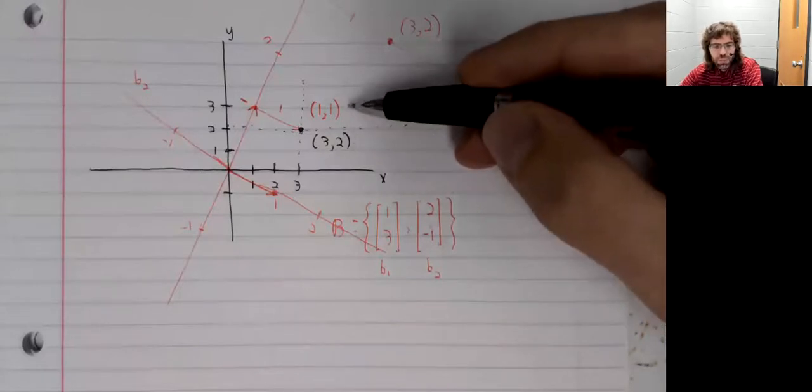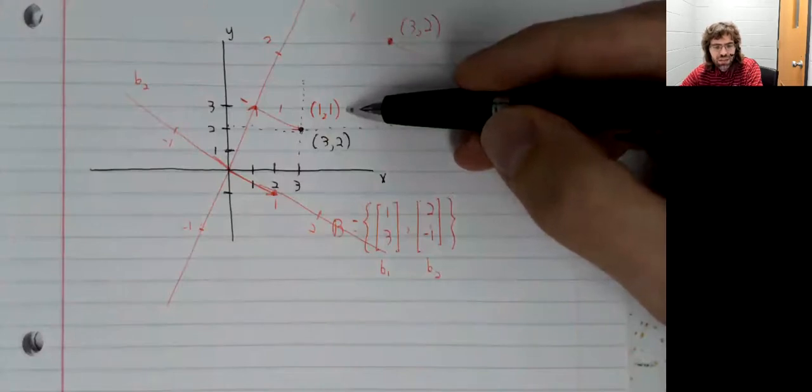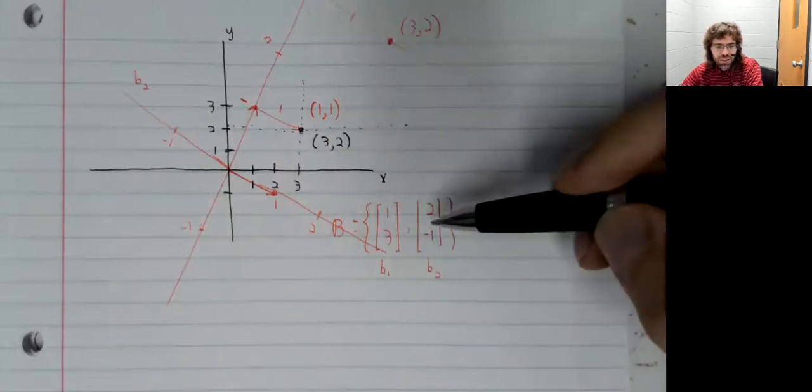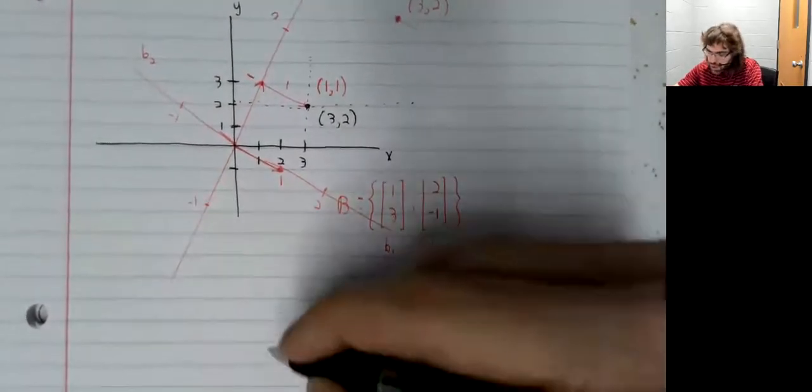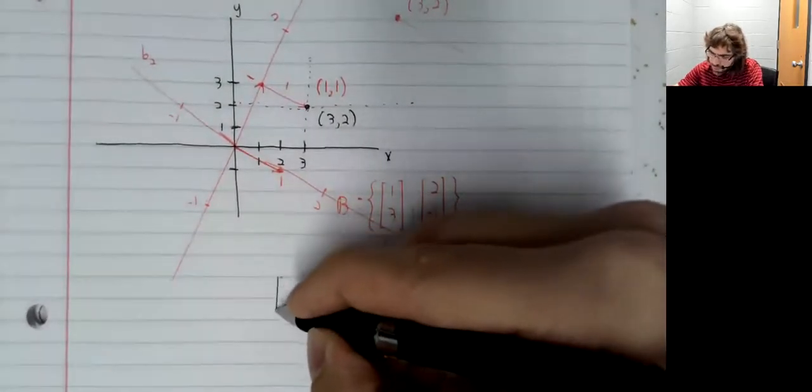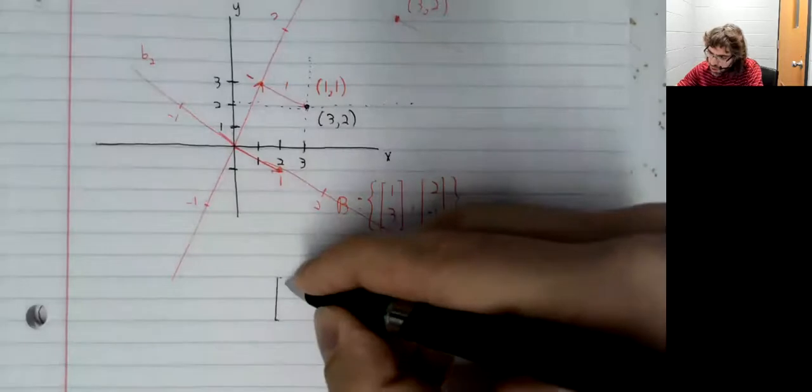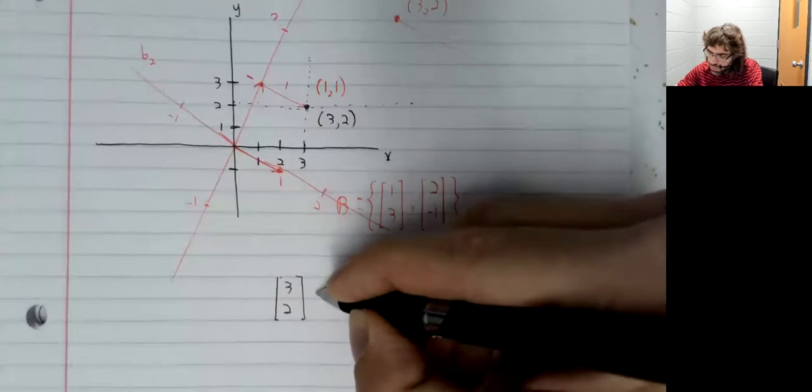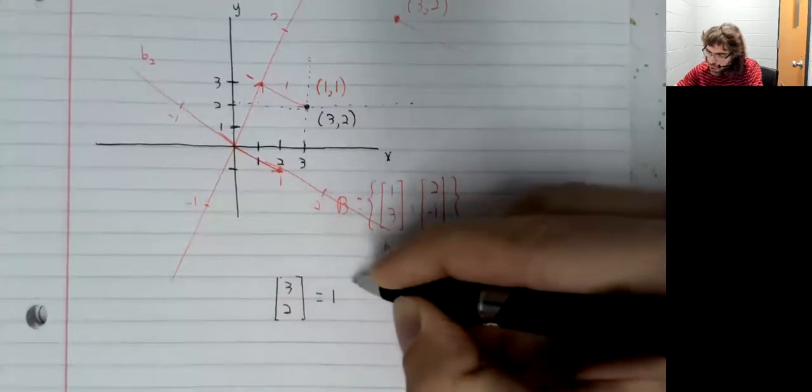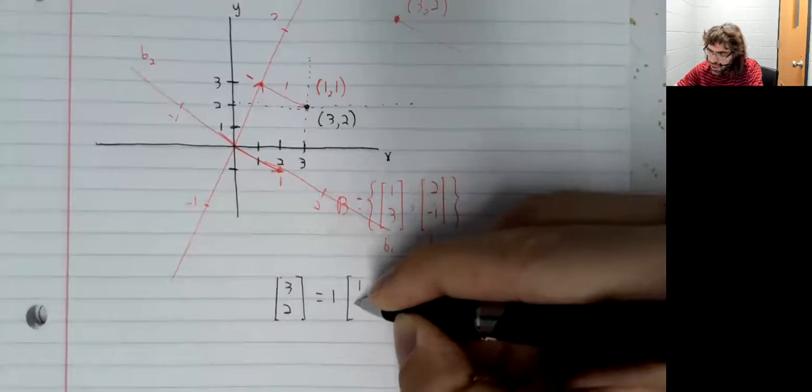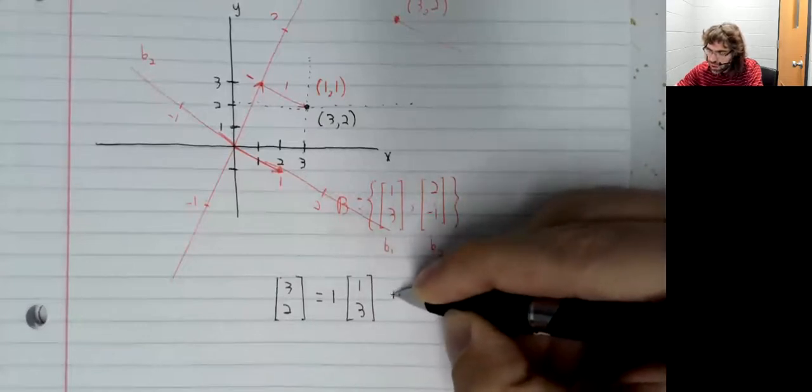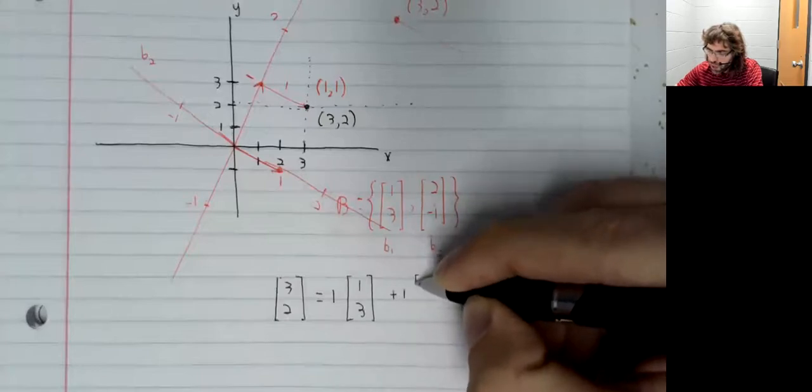The b1-b2 axis gives us [1, 1]. And now looking at this set, observe that [3, 2] is one times this basis vector plus one times the other basis vector.